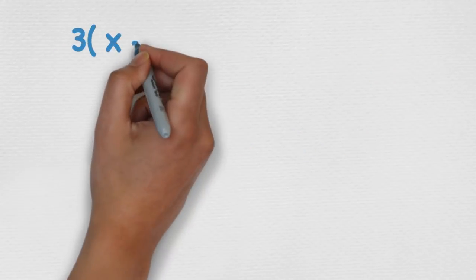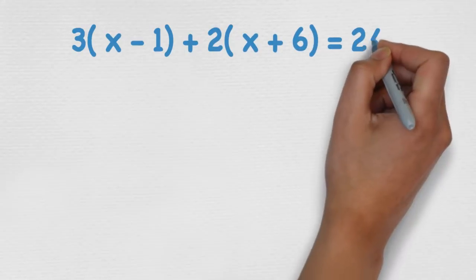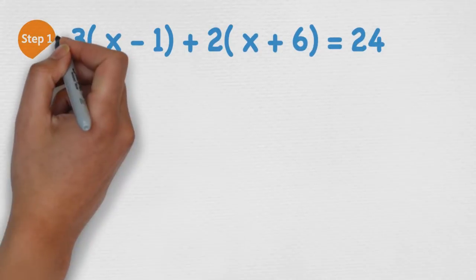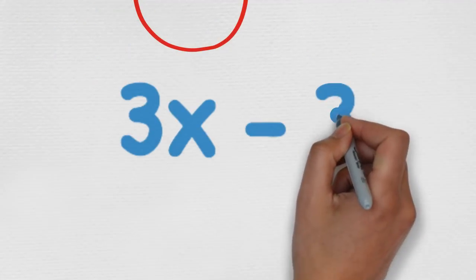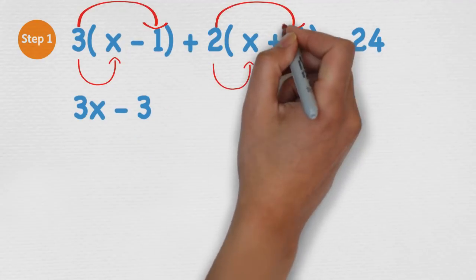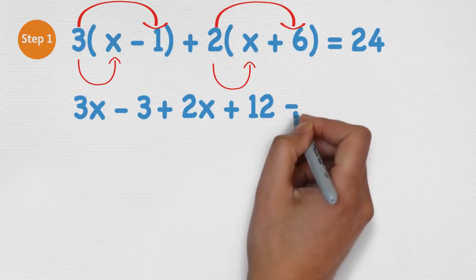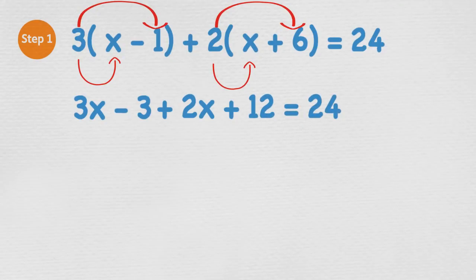If we go back to the equation now, on the first bracket we know we need to times everything inside by 3. So we're left with 3x - 3. However, unlike the other problem, we have two sets of brackets. So we need to do the same thing again. We notice the 2 is outside the brackets, so everything inside needs to be multiplied by 2, which leaves us with 2x + 12. And now our equation reads 3x - 3 + 2x + 12 = 24.